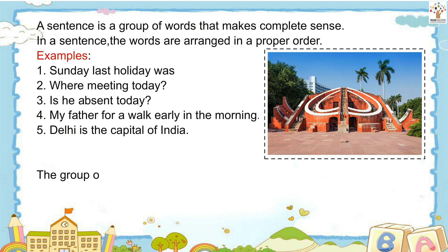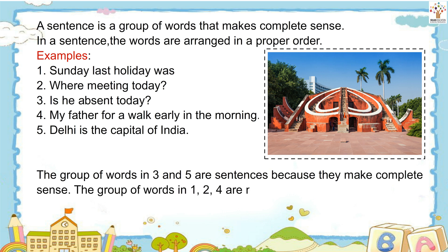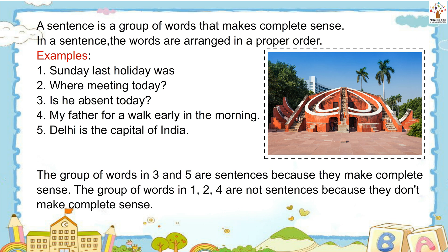The group of words in 3 and 5 are sentences because they make complete sense. The group of words in 1, 2, and 4 are not sentences because they don't make complete sense.